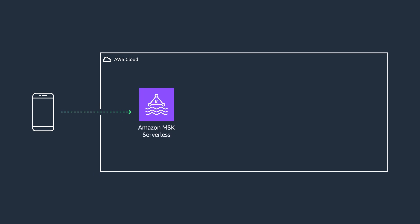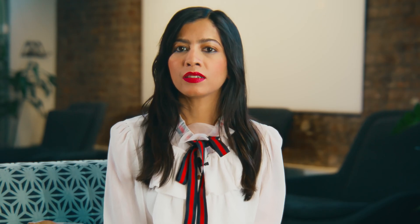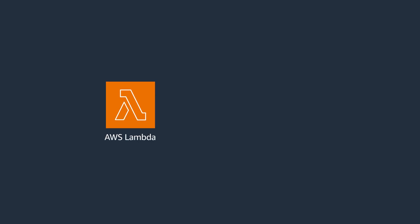All the data produced is consumed by your serverless consumer services like Amazon MSK Serverless. Since we want real-time analysis, you can use Amazon Kinesis Data Analytics to consume messages from Amazon MSK Serverless. Amazon Kinesis Data Analytics helps you gain actionable insights such as which ads are more effective by determining which ads your customers are clicking on. If you would like to interactively analyze and visualize your data, you can use Amazon OpenSearch Serverless. You can also use AWS Lambda and AWS Glue depending on your use case.